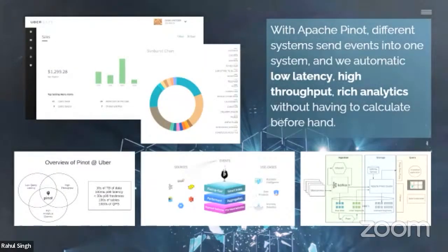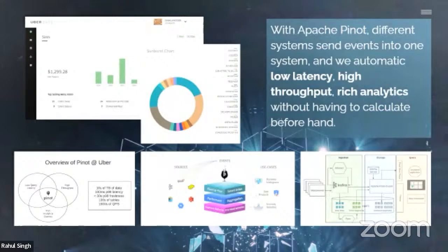Why do you need Apache Pinot? Uber needs it to see dashboards of what's happening in Uber Eats — the status of all orders at any given moment with hundreds of thousands of transactions happening every second. Pinot offers low-latency query, high throughput, and rich analytical queries. That Venn diagram of convergence is where Pinot is really best. You can put data into Pinot from a variety of sources — not just Kafka. Spark, Hive, batch data, or stream data all work.